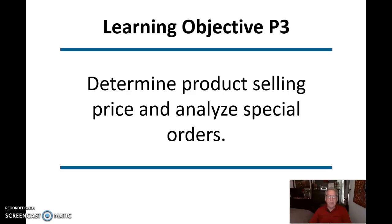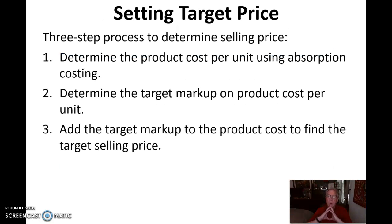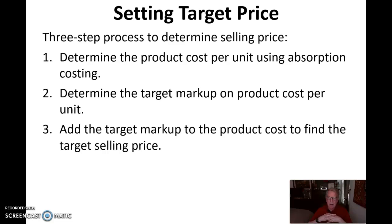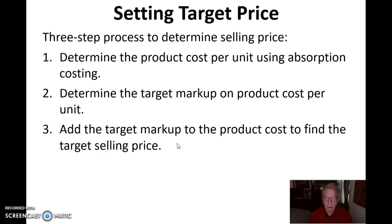Now we're going to determine the product selling price and analyze some special orders. There's a three-step process for determining the selling price — this is a target price based on a target markup. Oftentimes there are competitive pressures and we sell the product at what the market will bear, but it's good to have a target to determine whether we can be competitive. We determine the product cost using absorption costing, then apply a target markup — say 30% or 60% — and add that to the product cost to find the target selling price.